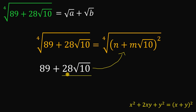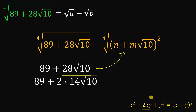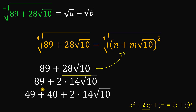The term 28 times square root of 10 — we factor 28 as 2 times 14, so we have 2 times 14 times square root of 10 as the middle term of the perfect square trinomial. We also need a perfect square and a multiple of 10 that add up to 89. The only pair that works is 49 and 40 — other combinations like 1 and 88, or 4 and 85, don't satisfy both conditions.